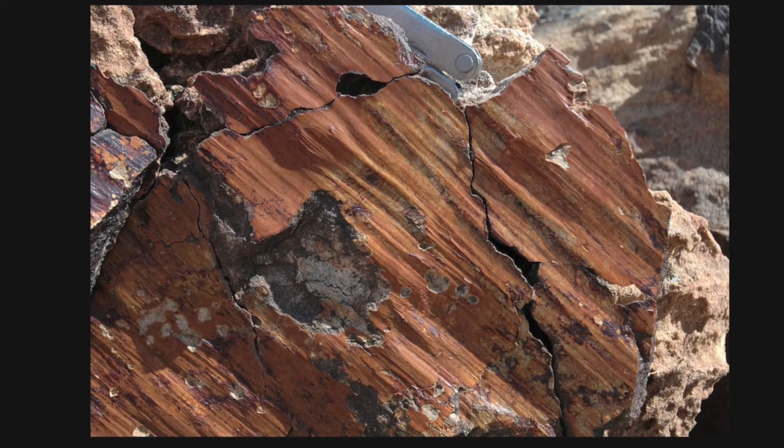So here we have an example of using slicken lines as an indicator of shear sense. Here we are pointing out lines formed by frictional sliding.